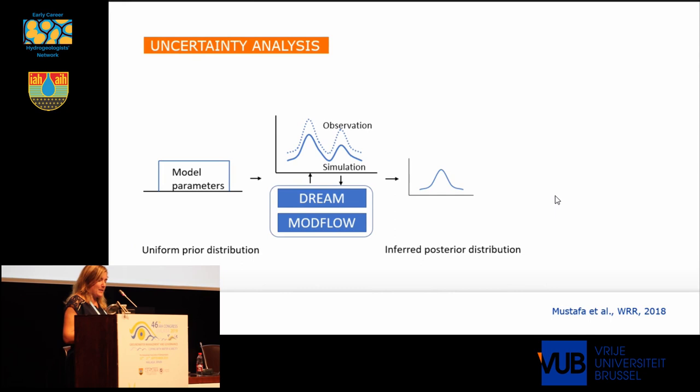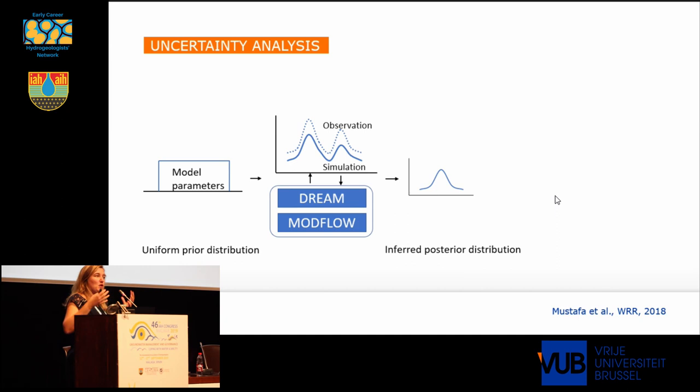The uncertainty we have about geological heterogeneity will also induce uncertainty on hydraulic heads, on concentrations, and so on. With multiple-point geostatistics, we can see how this uncertainty in heterogeneity results in uncertainty on the model results.